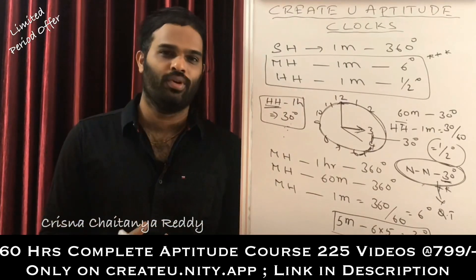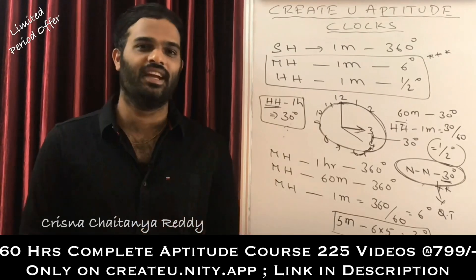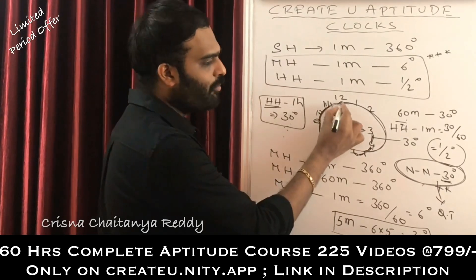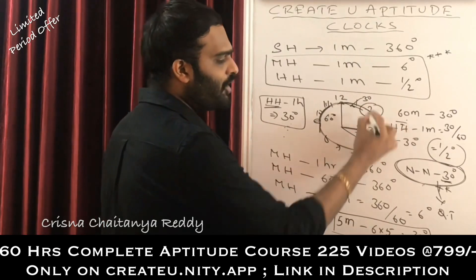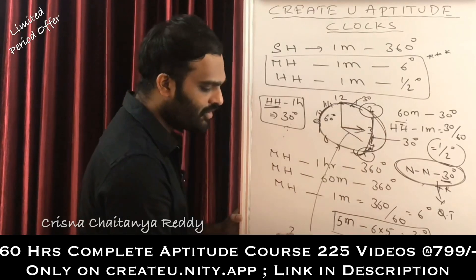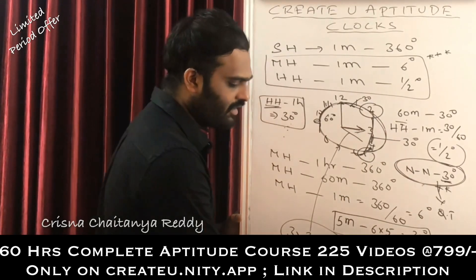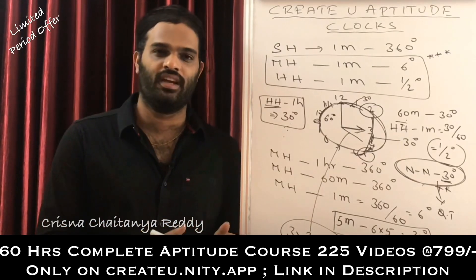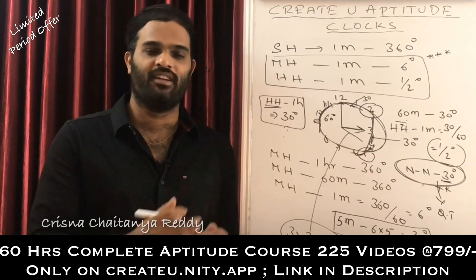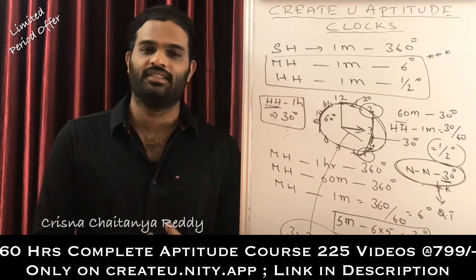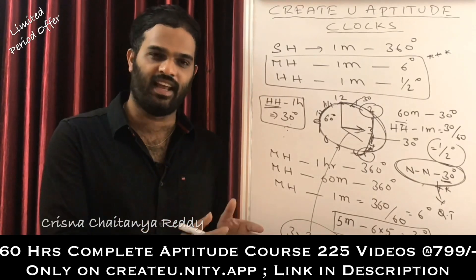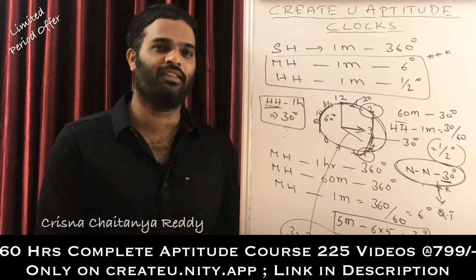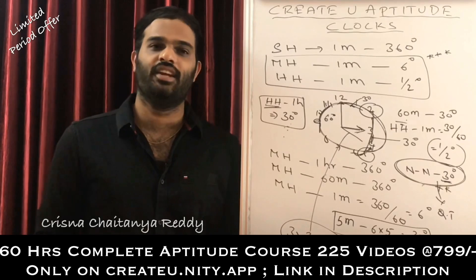The gap between 1 and 2 is 30 degrees, between 5 and 6 is 30 degrees. If someone asks the gap between 9 and 11, that's 30 + 30 = 60 degrees. The gap between 2 and 5 is 3 × 30 = 90 degrees. So to summarize the three key facts: the minutes hand covers 6 degrees per minute, the hour hand covers 0.5 degrees per minute, and the number-to-number gap is 30 degrees. Know these before solving clock questions.